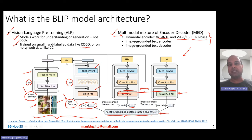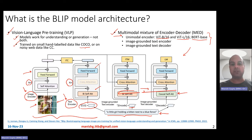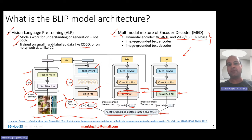ITC is the image-text contrastive loss. Given a positive image-text pair, you want to match the image with the positive text and ensure that negative texts are ranked lower — a typical contrastive loss also used in models like CLIP. You want the positive image-text pair ranked higher, and negative image-text pairs ranked lower, and the same holds on the other side. Another loss function is ITM, the image-text matching loss, which is a binary classification: given an image and text pair, do they match or not?